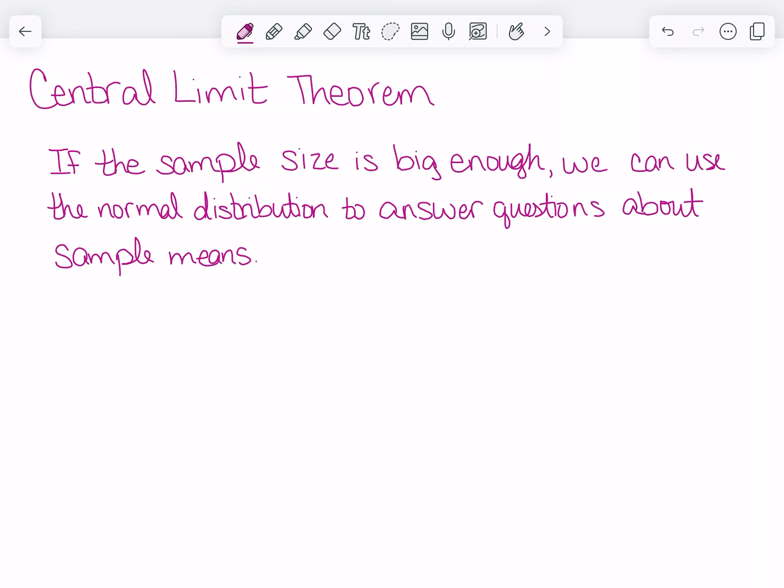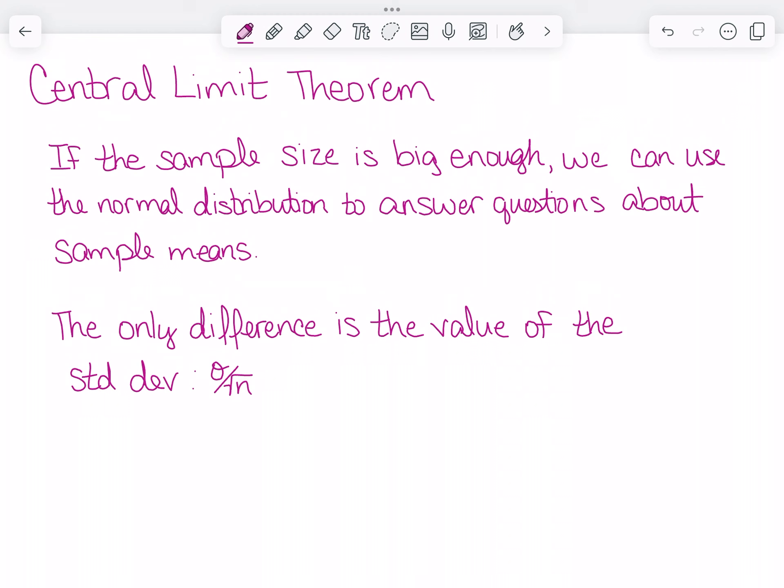It basically tells us that if our sample size is big enough, I can use the normal distribution to answer questions about sample means, even if my original set was not normal. The only difference is that instead of the standard deviation, I'm going to use sigma divided by the square root of n, the standard deviation from my sampling distribution.